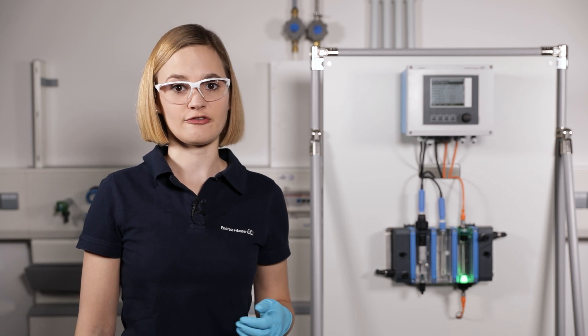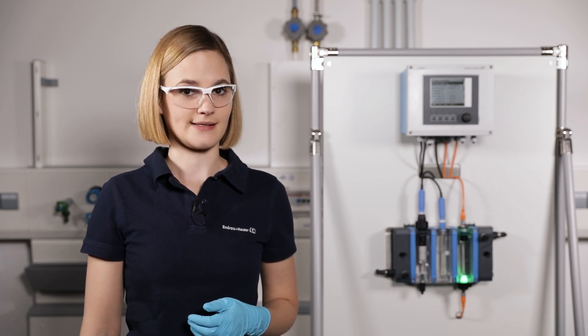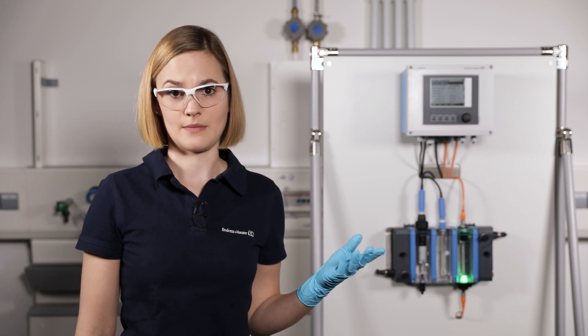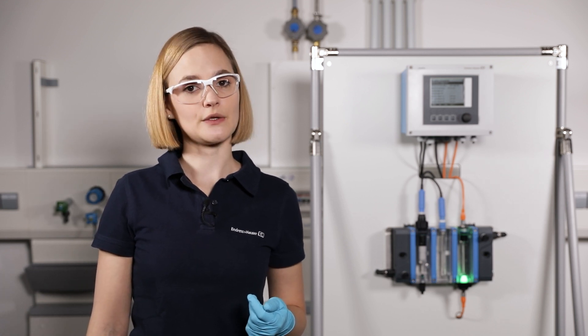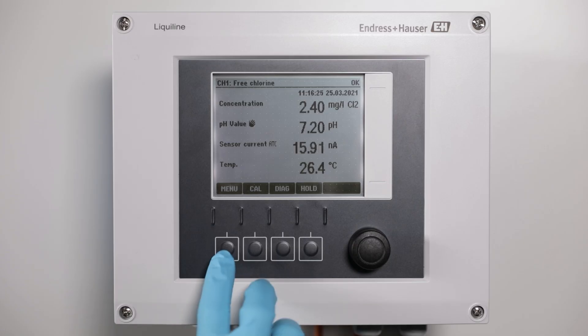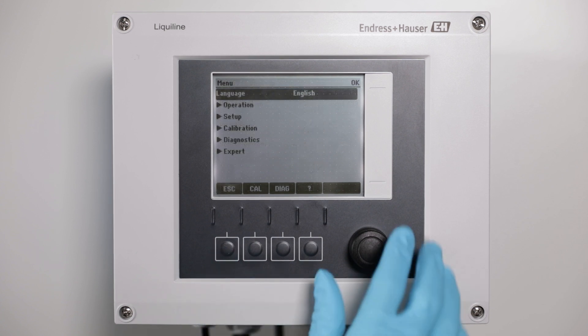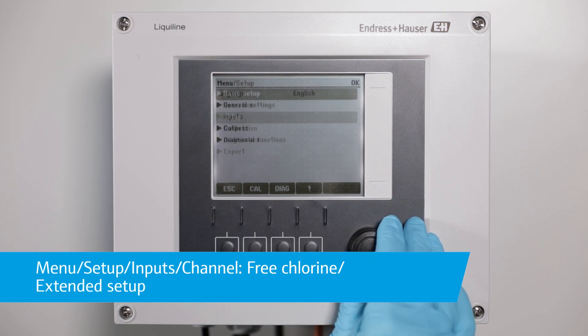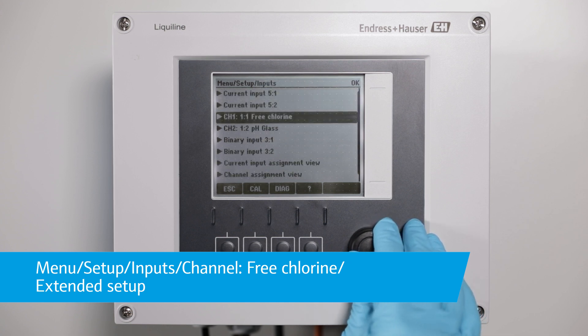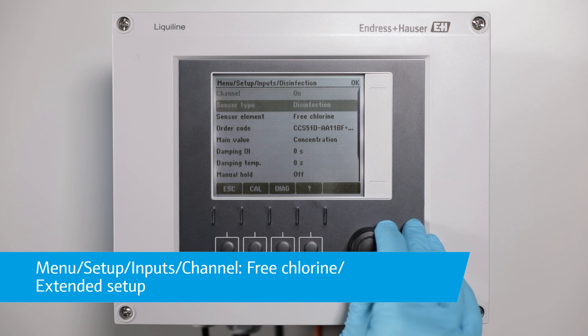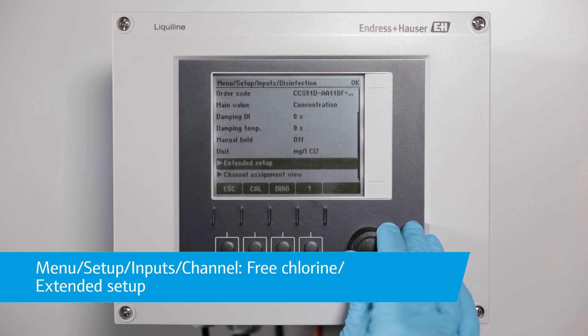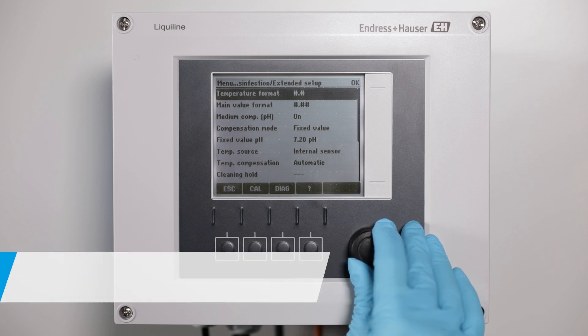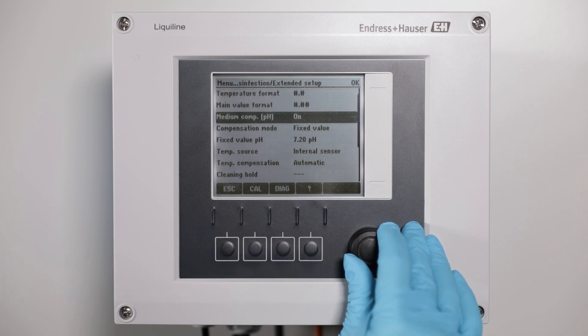A most important setting for free chlorine measurements is the pH compensation. In case a pH compensation is required, which is in the majority of the free chlorine applications, don't miss to set it up in the liquid line menu. To assign the measured pH value for compensation, go to Menu Setup Inputs and select the input of the disinfection sensor CCS51D. Afterwards go to Extended Setup and scroll down to Medium Compensation pH.